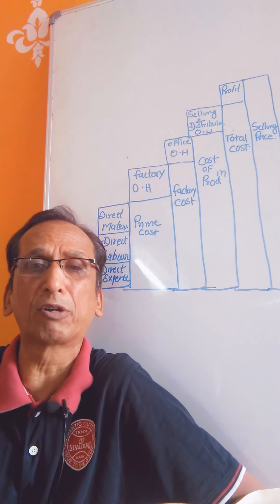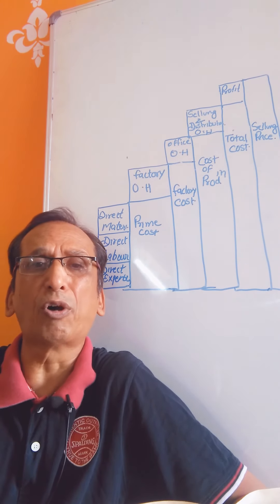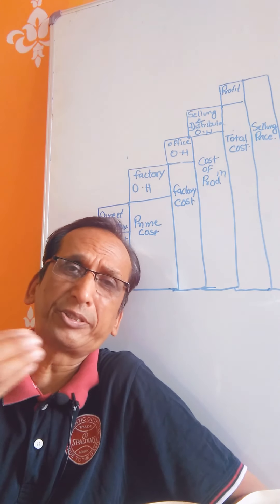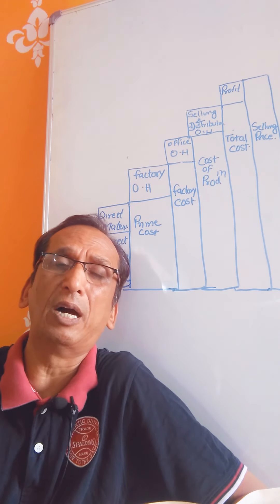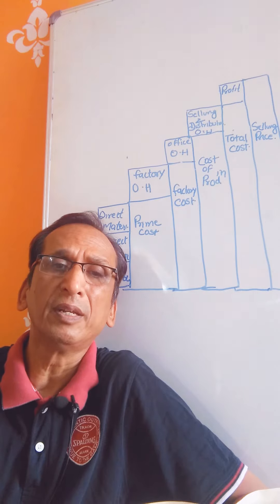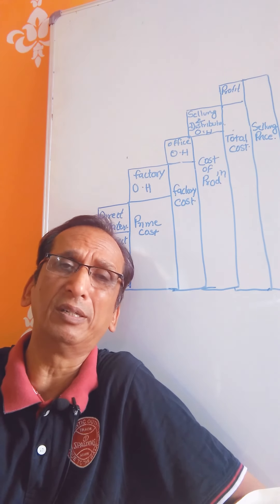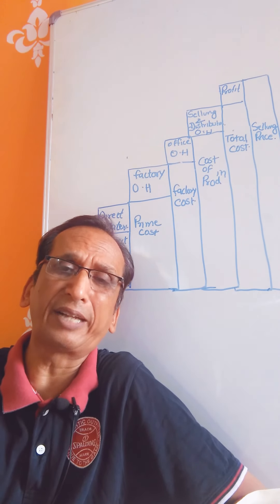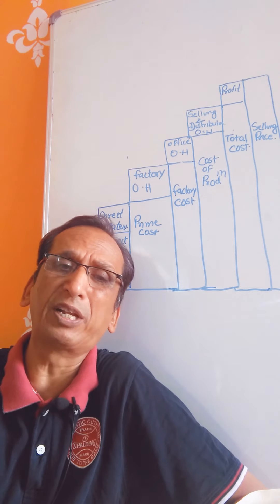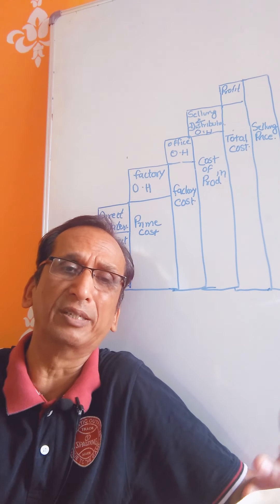In variable cost, these are costs which change according to the output. Direct material, direct labour, direct expenses, and variable overheads are examples of variable costs.